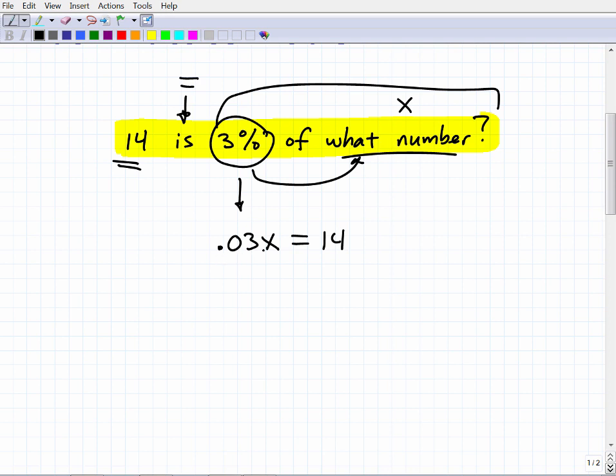So 3% of what number? Remember, 0.03 times whatever that number is. It's a mystery number, right? So 0.03. I know if I knew what that number was, I would just go, oh, OK, 0.03 times that number. And my answer is going to be 14.